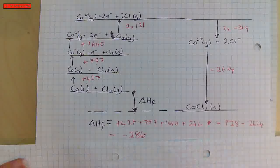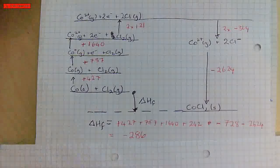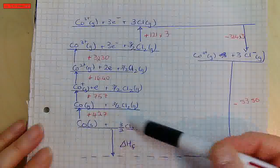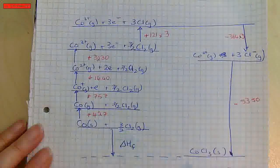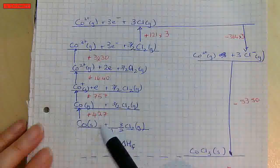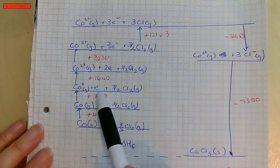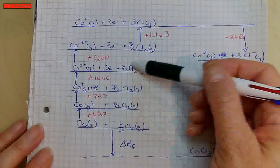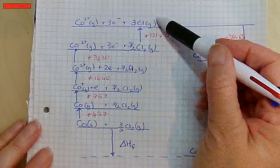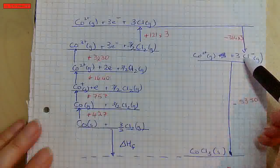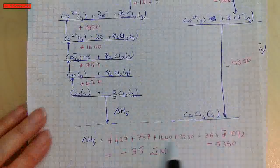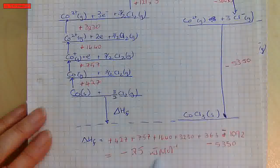Now I'll look at the final one, which is cobalt 3 chloride. The enthalpy of formation: cobalt plus 3/2 Cl₂ gives cobalt 3 chloride. I have the atomisation, first electron ionisation energy, second ionisation energy, and third ionisation energy of cobalt. Then taking chlorine, I'm making three chlorine atoms. Those chlorine atoms become three chloride ions, and this is the lattice enthalpy of formation. Adding all of those together gives minus 25 kilojoules per mole as the enthalpy of formation.